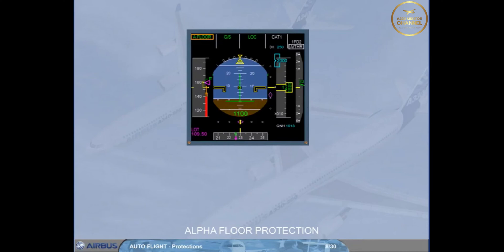When alpha floor is triggered, autothrust is turned on if it was previously off, indicated by a white "autothrust on" on the FMA. Alpha floor in green is displayed as the autothrust mode.